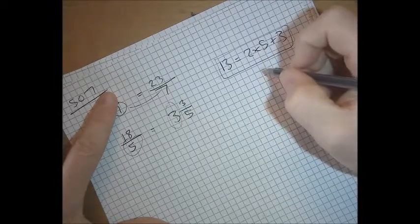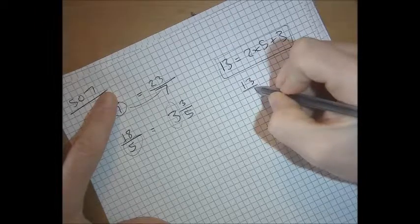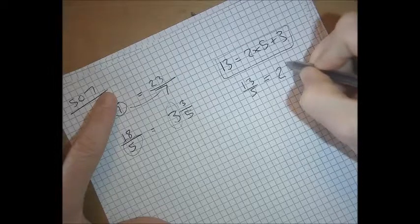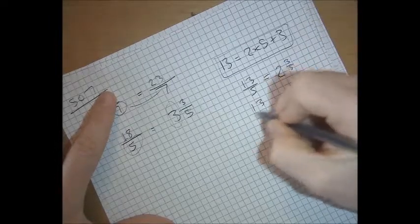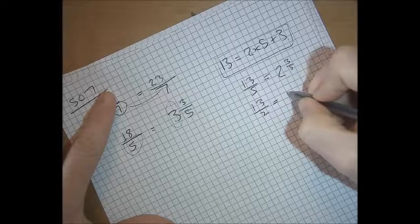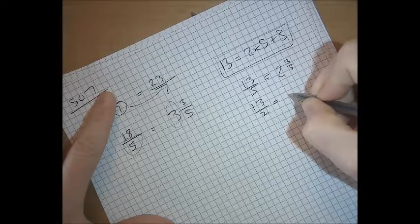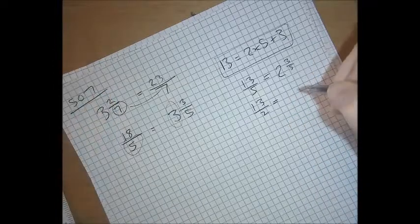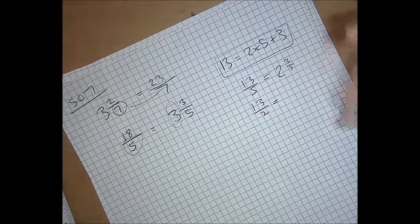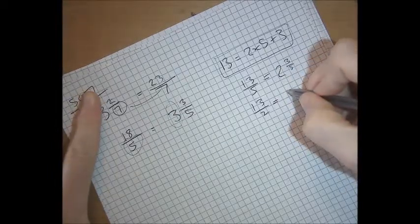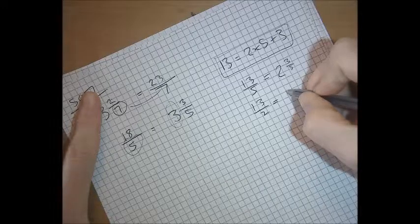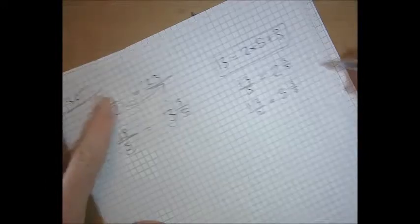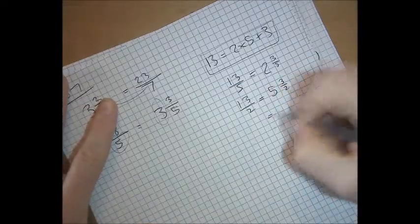That means that 13 over 5 equals 2 and 3 fifths. It means that 13 over 2 equals, I'm just going to say that equals 5 and 3 halves, which it certainly does. It's just that that is a bit ridiculous.